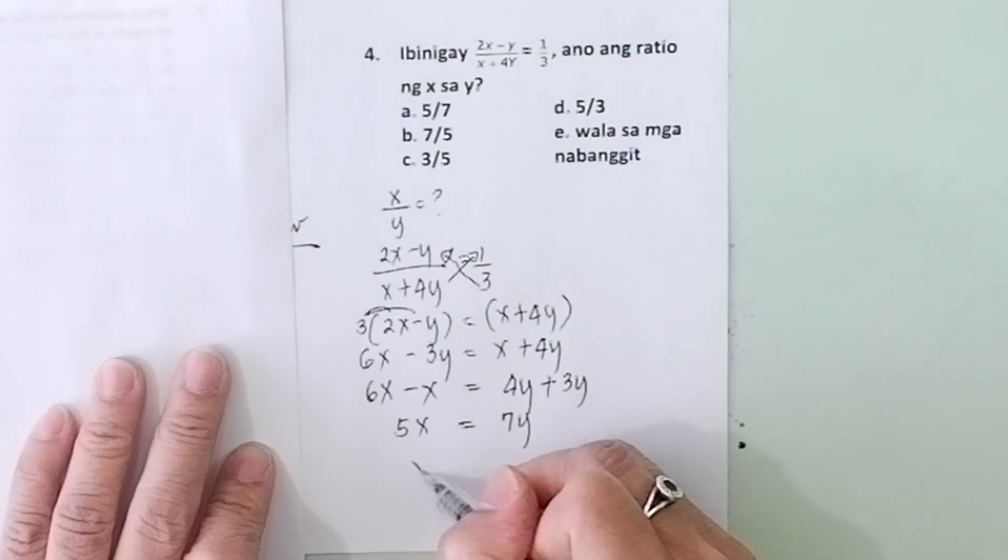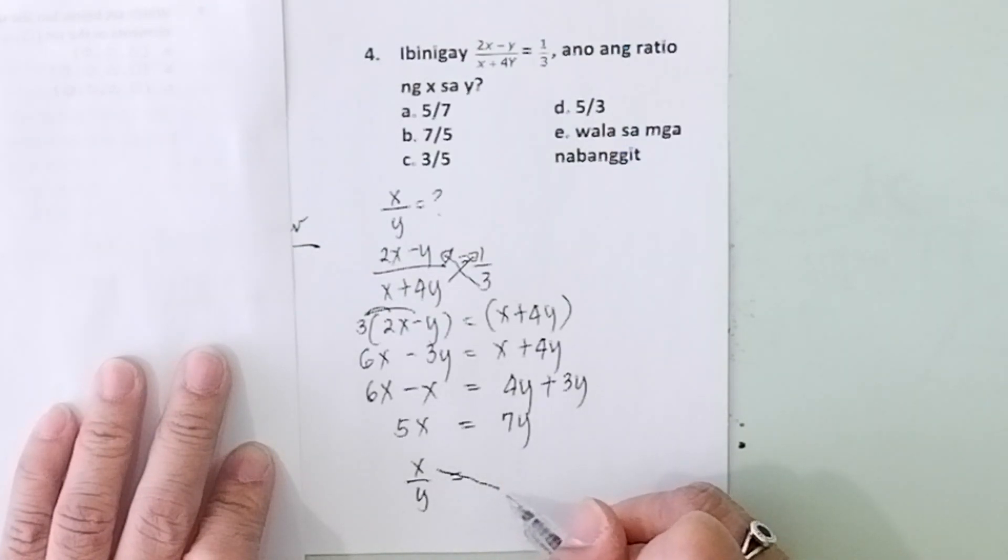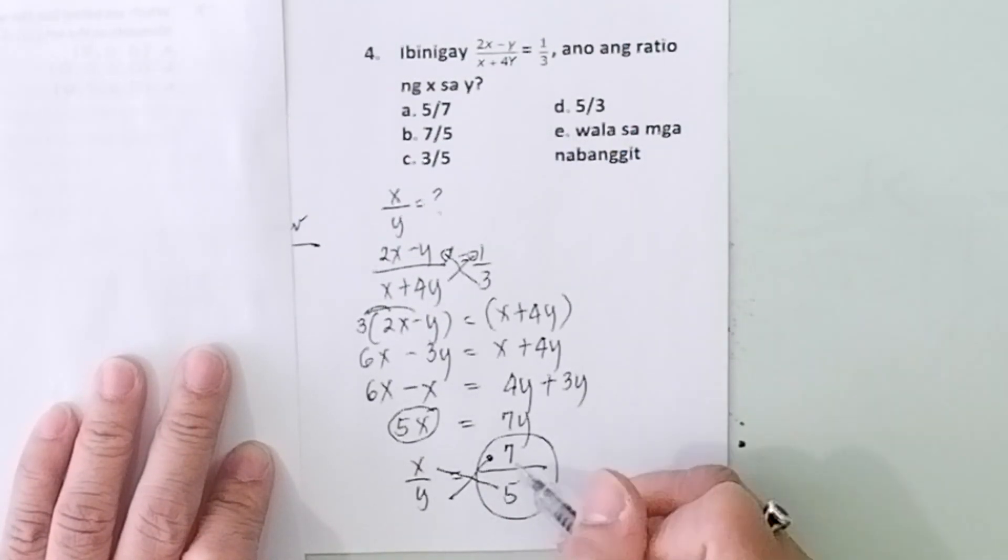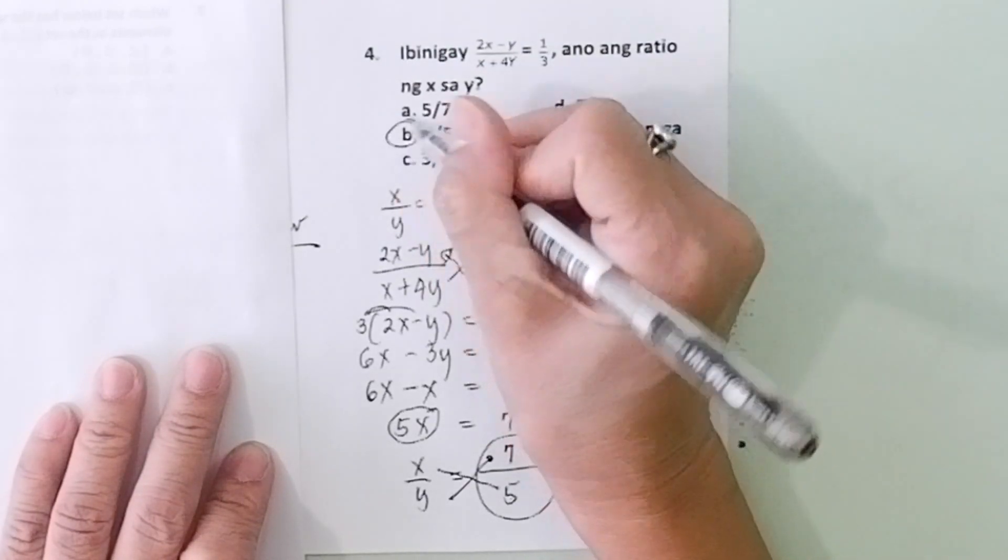You copy x to y, which is unknown. And then you cross it here. When you cross it here, what is the number here for you to get 5x? 5 times x is 5x. What should be the number here for you to get 7y? It's 7. So the answer is x over y is 7 over 5, letter B.